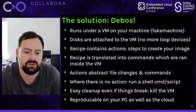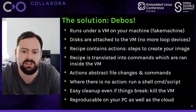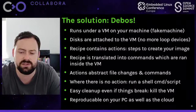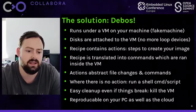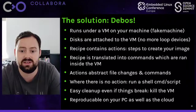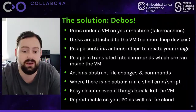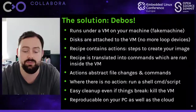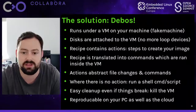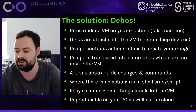Under DevOS, the steps to create your image are contained in a recipe file. This recipe is translated into commands run inside the virtual machine. These recipes and commands are known as actions, which abstract file changes and commands in a nice way. If there's no action available, you can run a shell command or script inside the VM. When things go wrong, all you do is kill the VM and everything's gone - you can restart cleanly. Images are reproducible on your PC as well as the cloud.